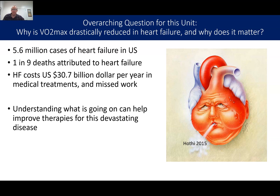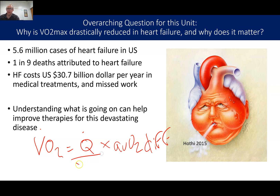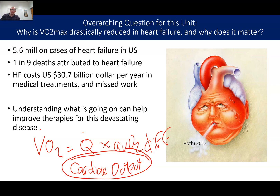One of the reasons — and this is like a spoiler — if we look at VO2, it can be calculated as a product of cardiac output (Q) times the arterial-venous oxygen difference. The arterial-venous oxygen difference is the content of oxygen in the artery versus the content of oxygen in the vein. Cardiac output is how much blood the heart can pump every minute.